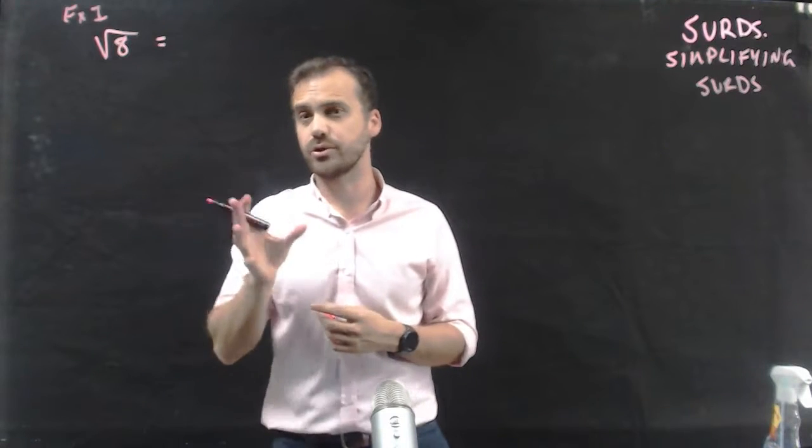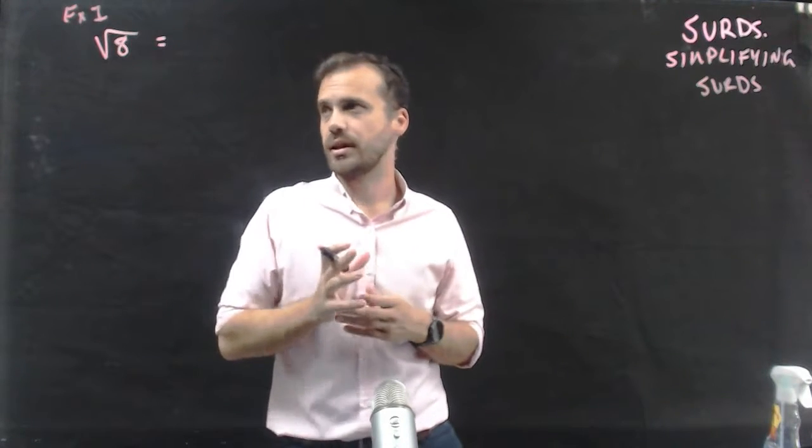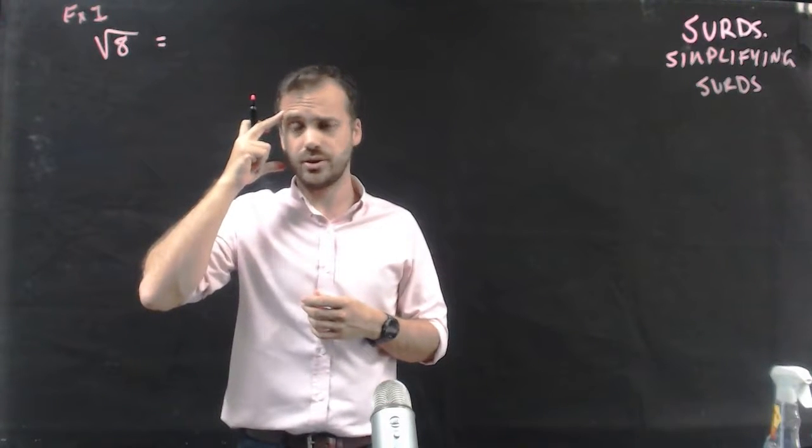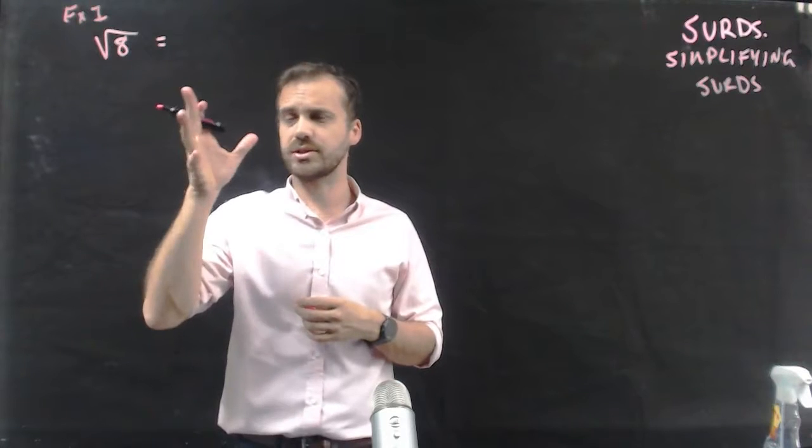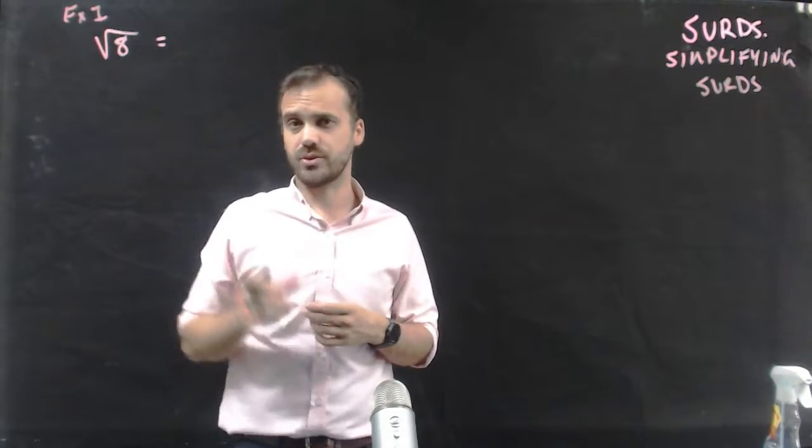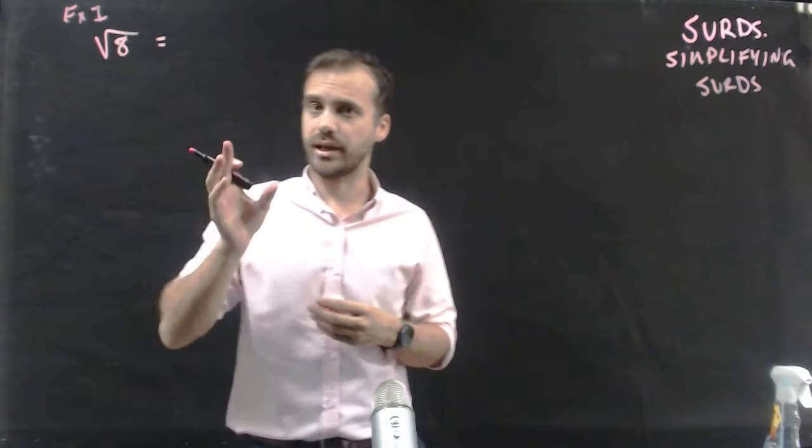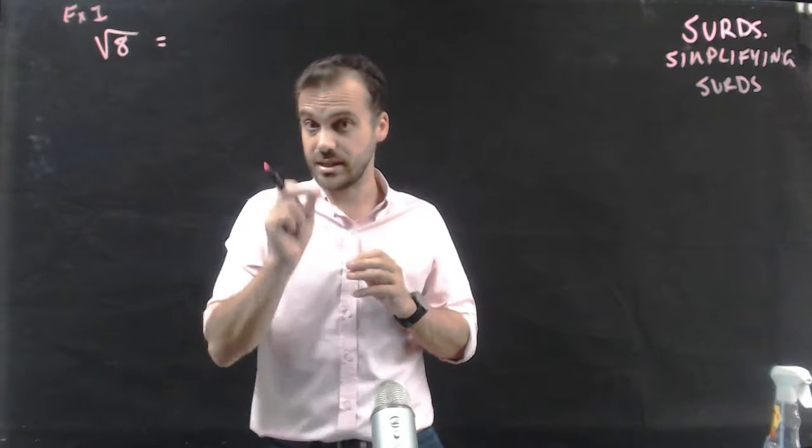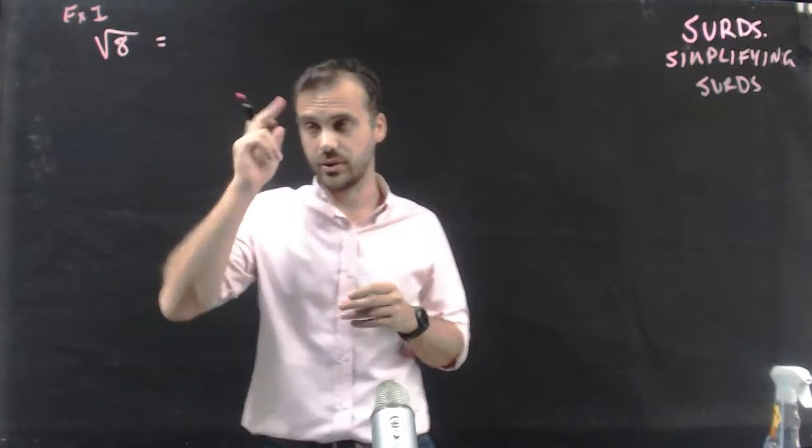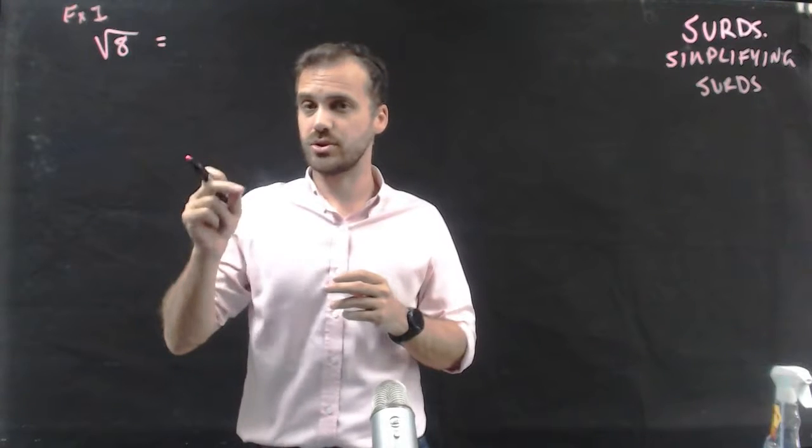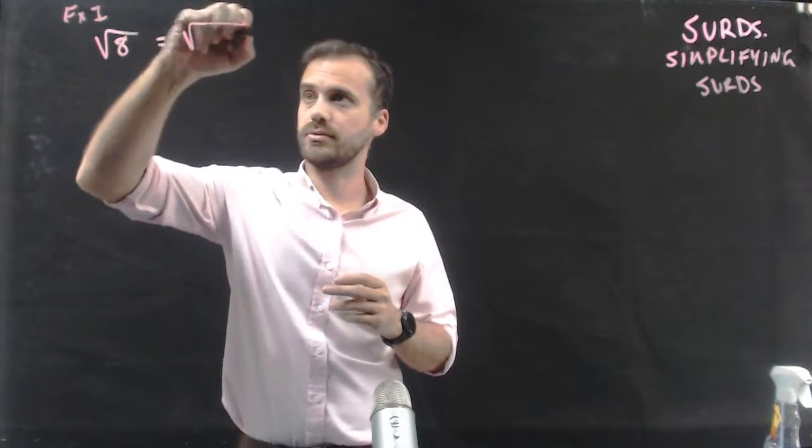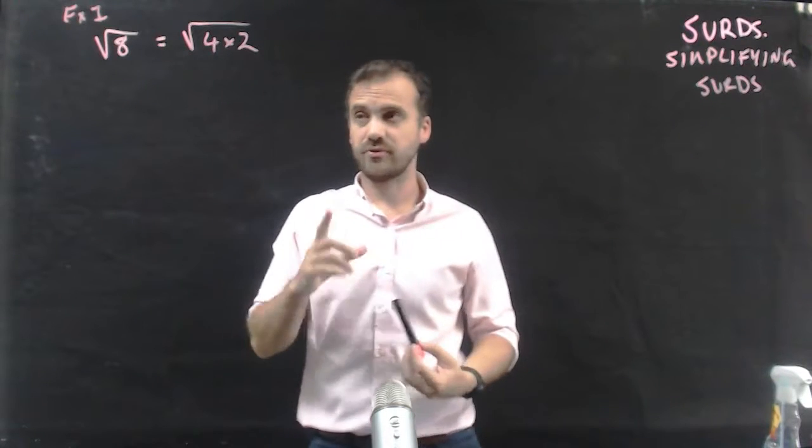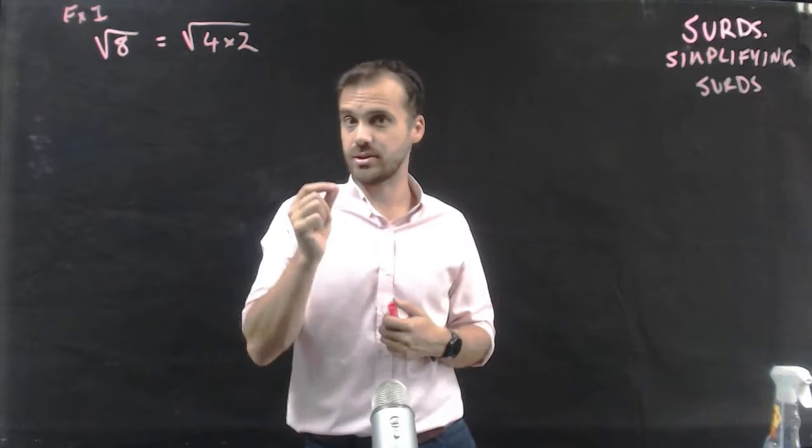Here's my first example, the square root of 8. Now, if I look at 8 and I go through my square numbers in my head, 8 is not a square number. So we've got a problem. How am I going to simplify this if 8 is not a square number? What I should do is look at 8 and say, is there a factor inside of 8 that is a square number? So, thinking, yes, 4 times 2 equals 8. Now I can see the number 4 is a square number, and that's important.